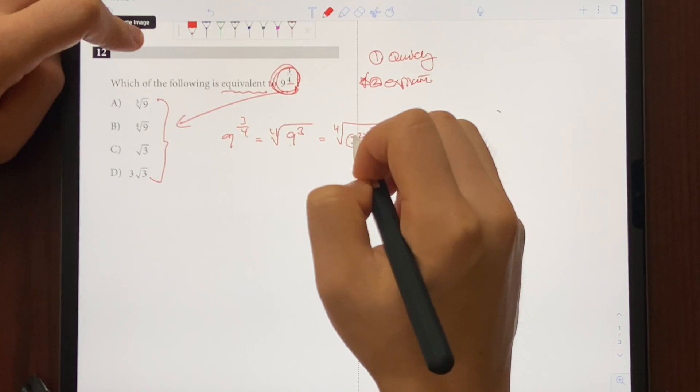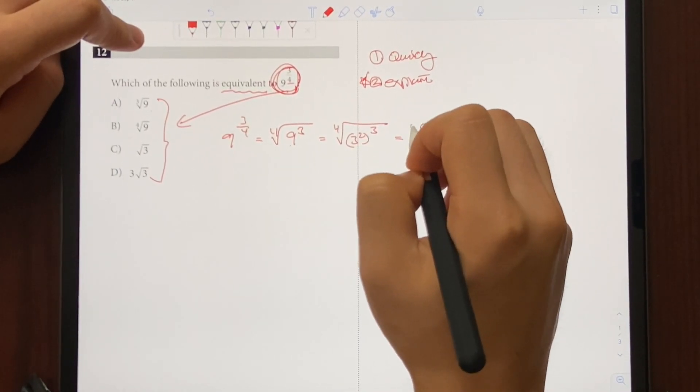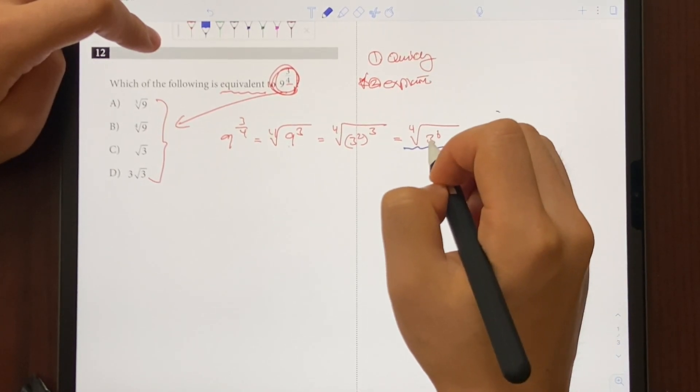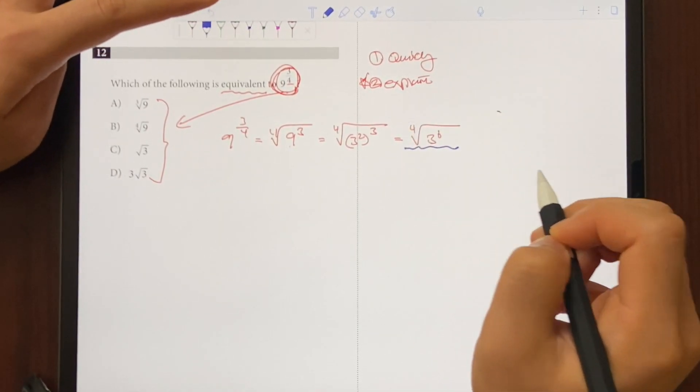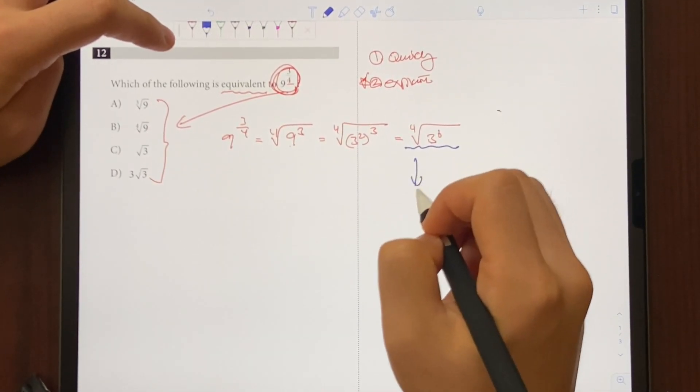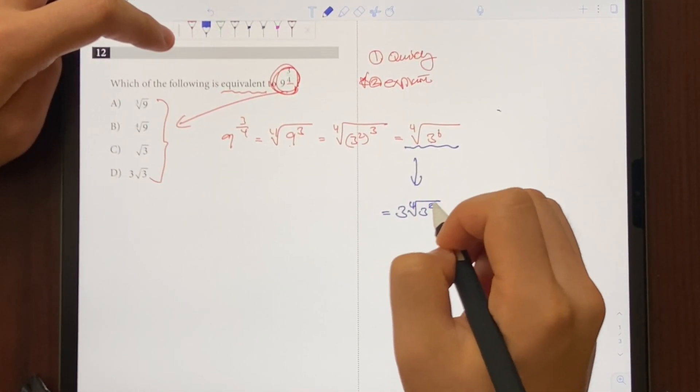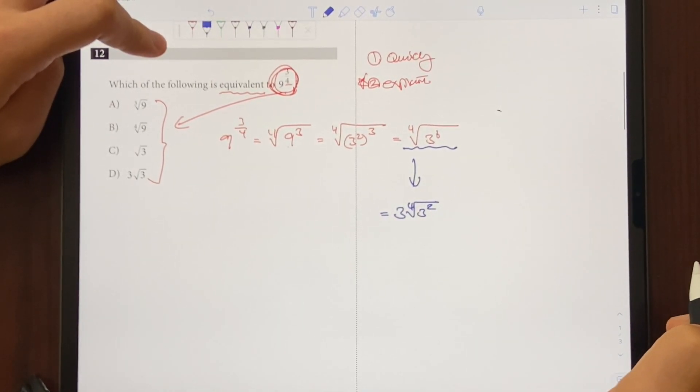And if you expand the exponents, it's going to look something like quad root of 3 to the sixth power. And from here, we can simplify this a little bit because we have three sixes on the inside and we only need four of them to come out. So this can be rewritten as 3 quad root of 3 to the second power. Four of them left, so 2 is on the inside.